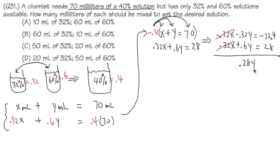We have 0.28y equals 5.6, so divide both sides by 0.28. This gives y equals 5.6 divided by 0.28, which is 20.